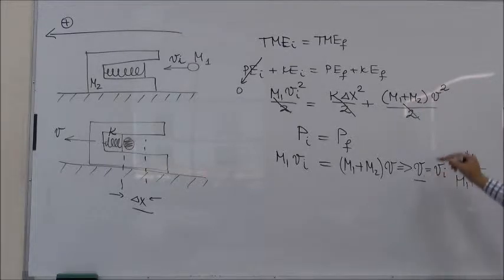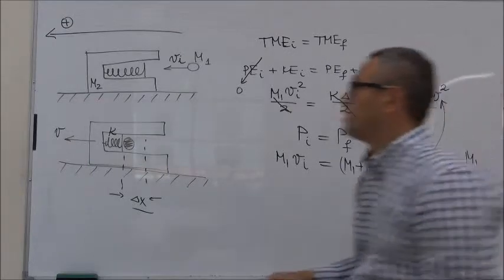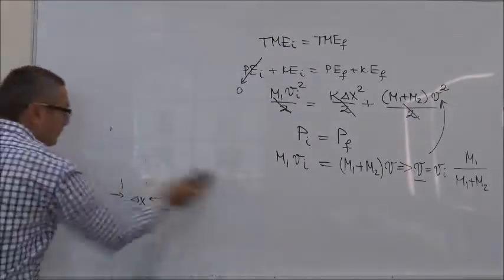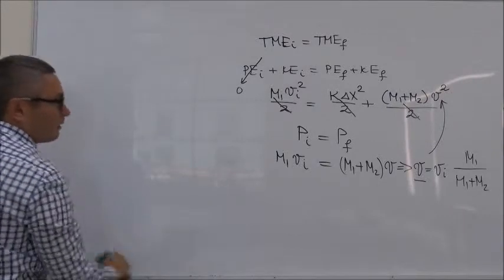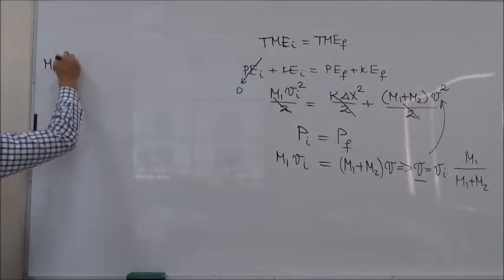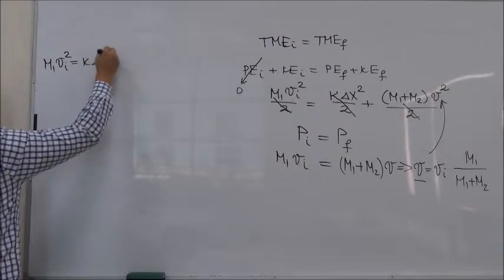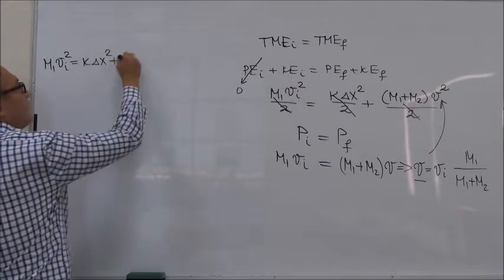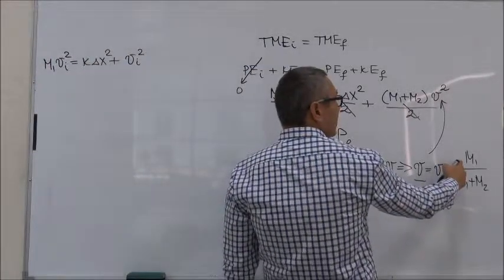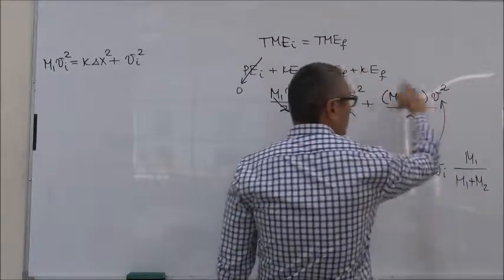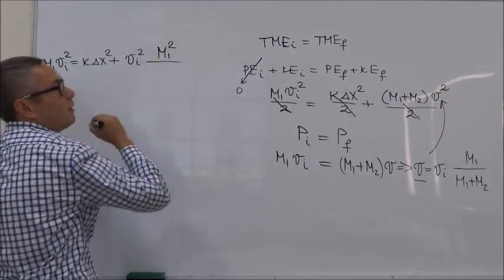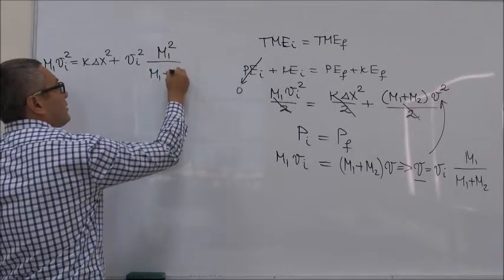So now we can take this V and plug it in the original equation. So we have M1 V initial squared equals K delta X squared plus V initial squared, M1 squared divided by M1 plus M2, because M1 plus M2 will be cancelled here. So this is equal to M1 squared over M1 plus M2.